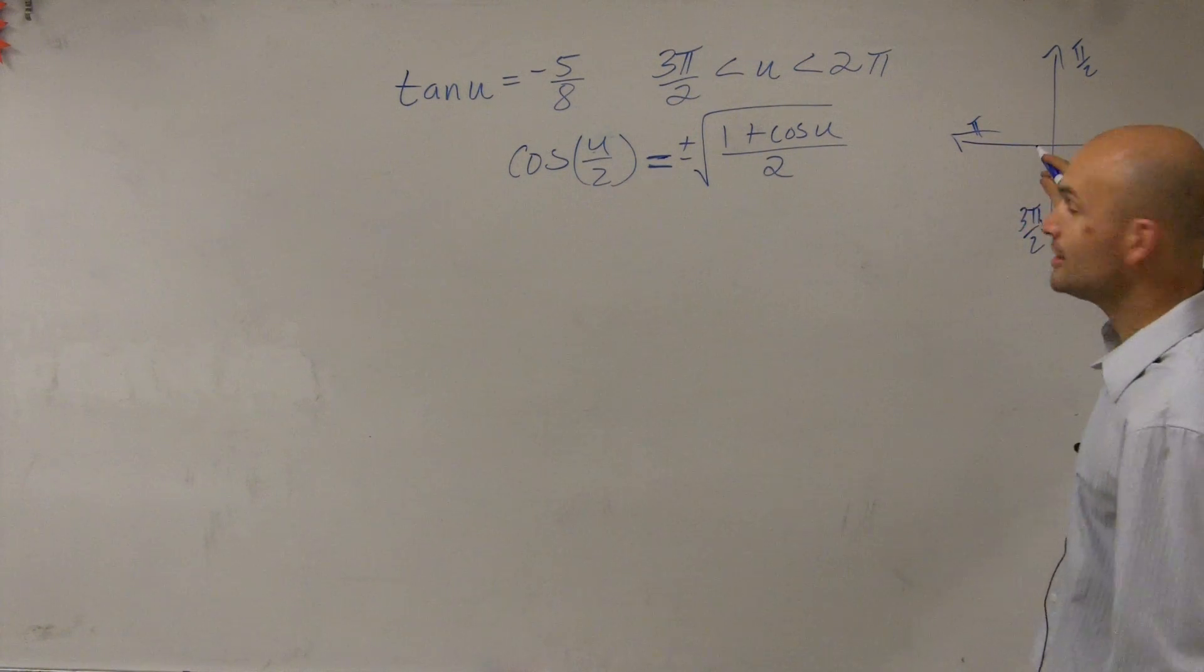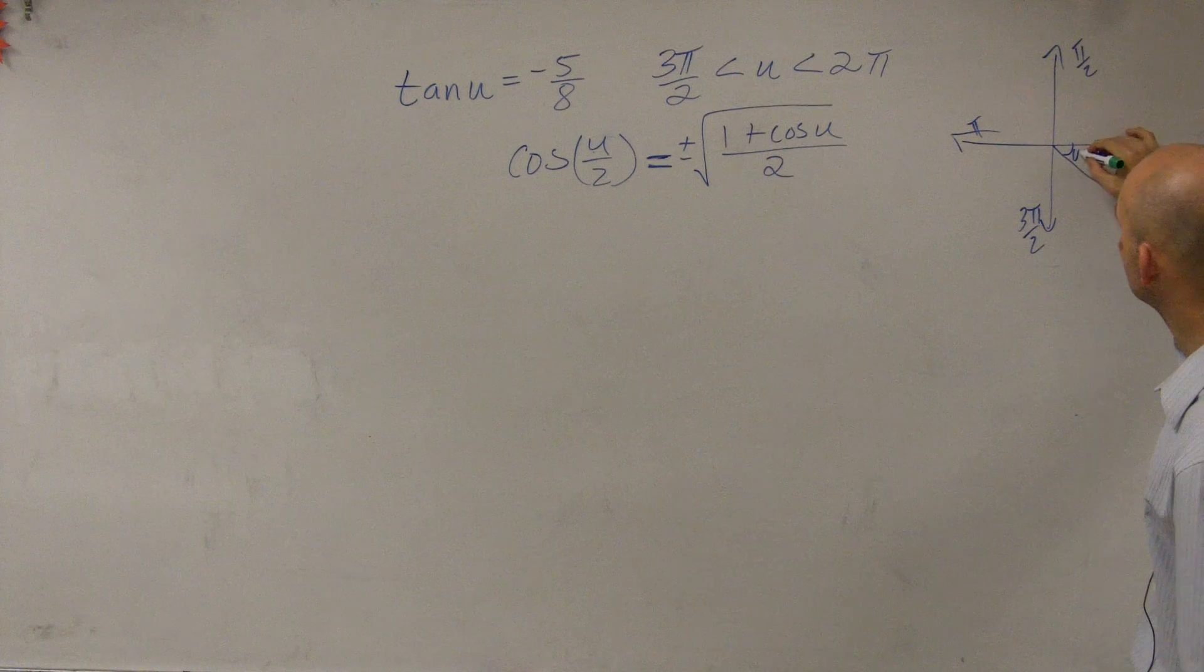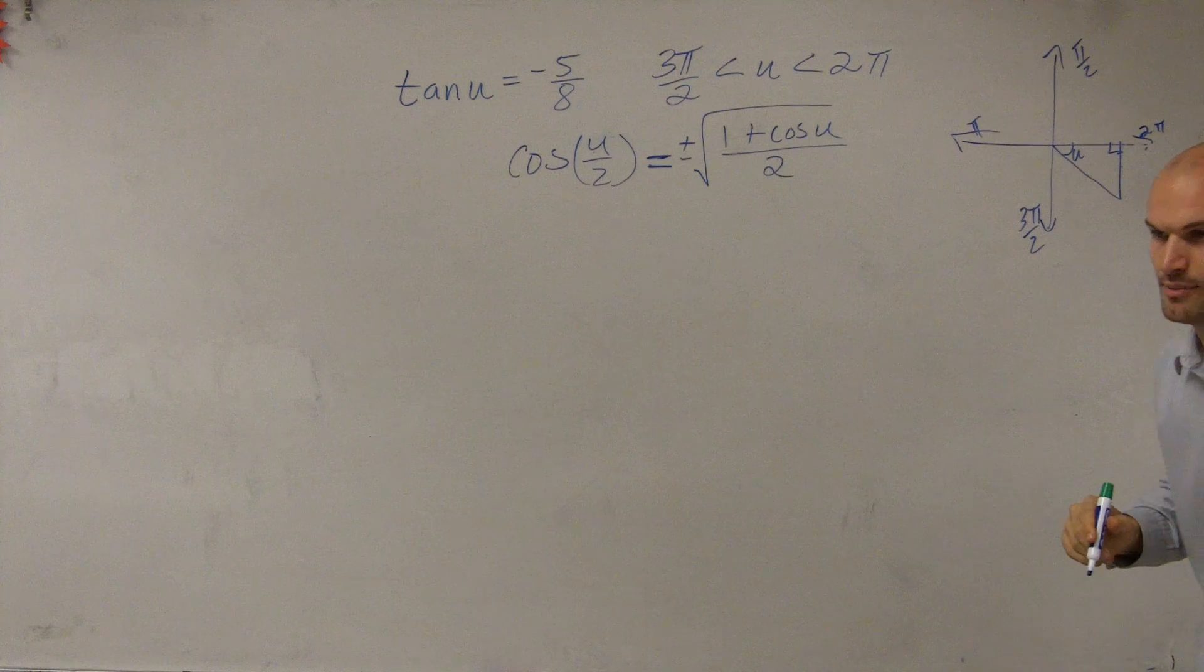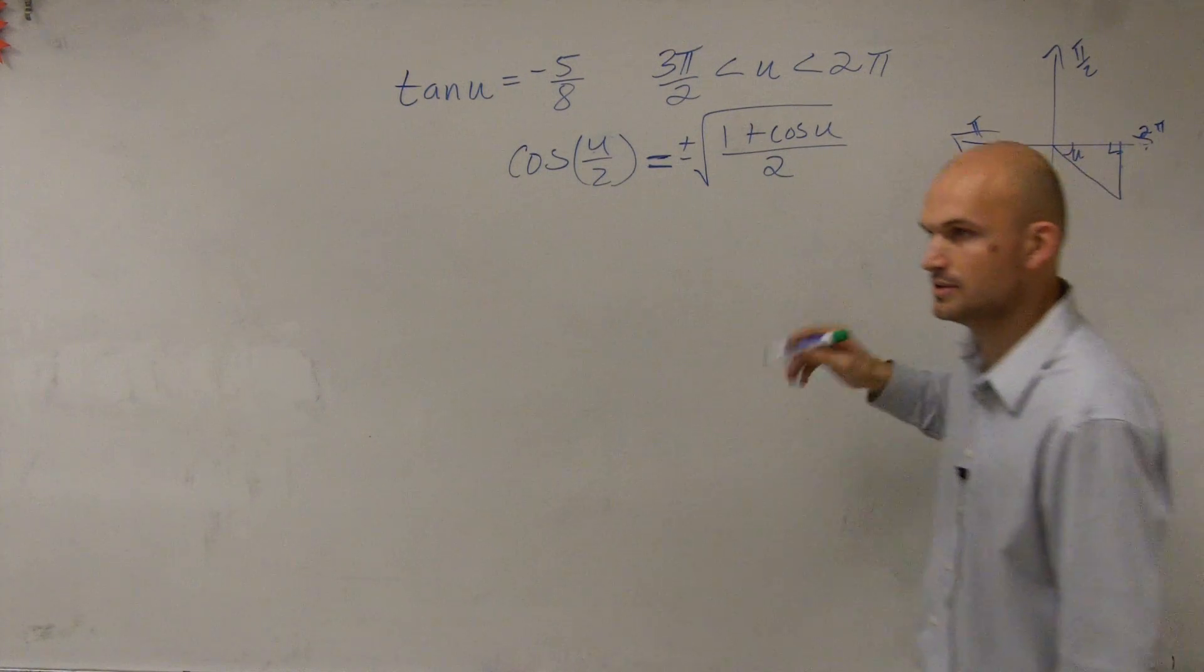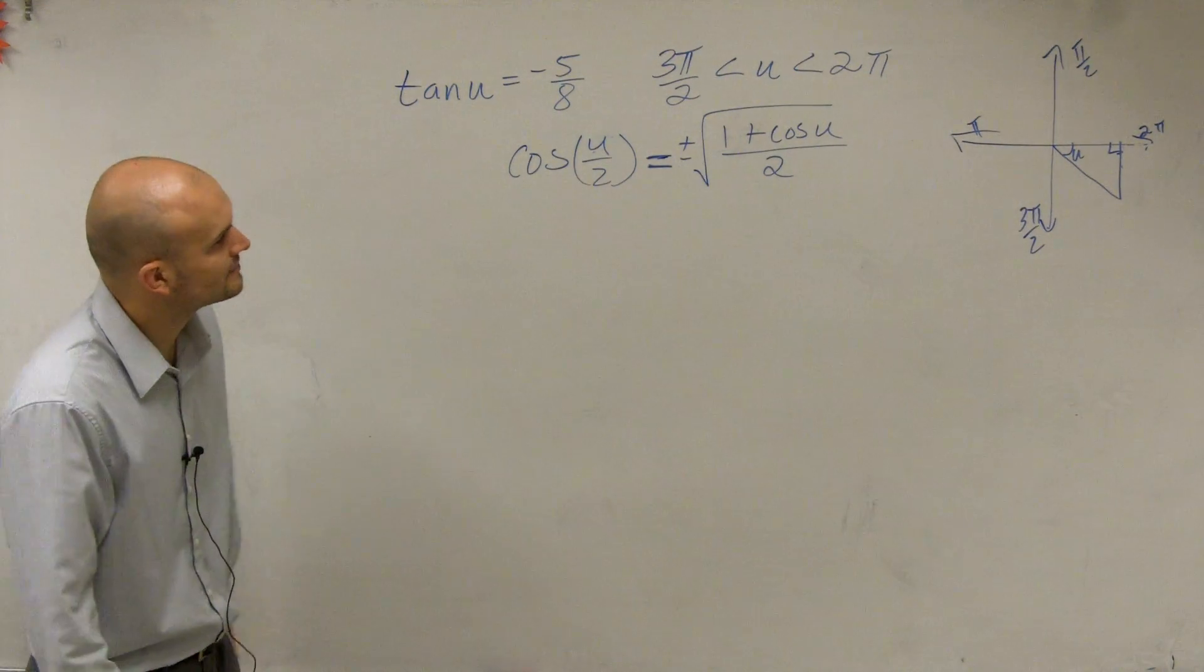So my angle u has to be between 3 pi over 2 and 2 pi. Therefore, my angle, by using a central angle, it's going to look something like this, where here's u and here's my right angle. We'll put 2 pi over there. Does everybody follow how I put my triangle in that fourth quadrant? Make sure always with our alpha, we make it with a central angle.